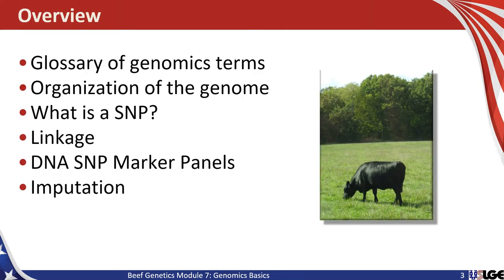An overview of today's module includes a review of the glossary of genetics terms, some discussion on the organization of the bovine genome, identification and definition of single nucleotide polymorphisms or SNPs, a review of linkage and its importance in genetic and genomic evaluation, discussion on DNA SNP marker panels and their densities, and finally, a discussion about imputation and its application in beef cattle genomics.